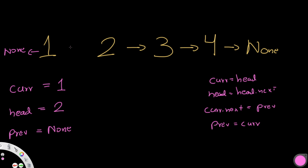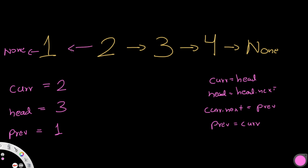Now the second iteration: current becomes the value of head, so current is now two. Head moves to three. Then current.next — that is, two — points to the previous node, which is now one. So two points to one. Then we update previous to be equal to current, which is two, because when we go to three, three has to point to two.